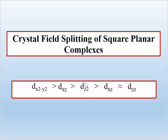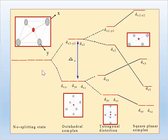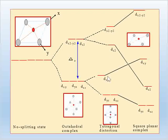In square planar geometry, dz² has higher energy compared to dxy in square pyramidal, but lower than dxy in square planar. In square planar geometry, there is no ligand on the z axis at all. So z-related orbitals — dyz, dzx — have lower energy. After tetragonal distortion, z orbital splitting decreases further, and the order becomes: dx²-y², dxy, dz², then dyz and dzx.